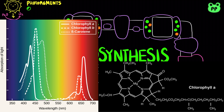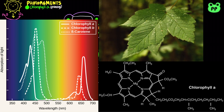Chlorophyll A is the primary photopigment in plant photosynthesis. It absorbs violet, blue, and red light, while reflecting green light, which contributes to the green color we see in leaves.